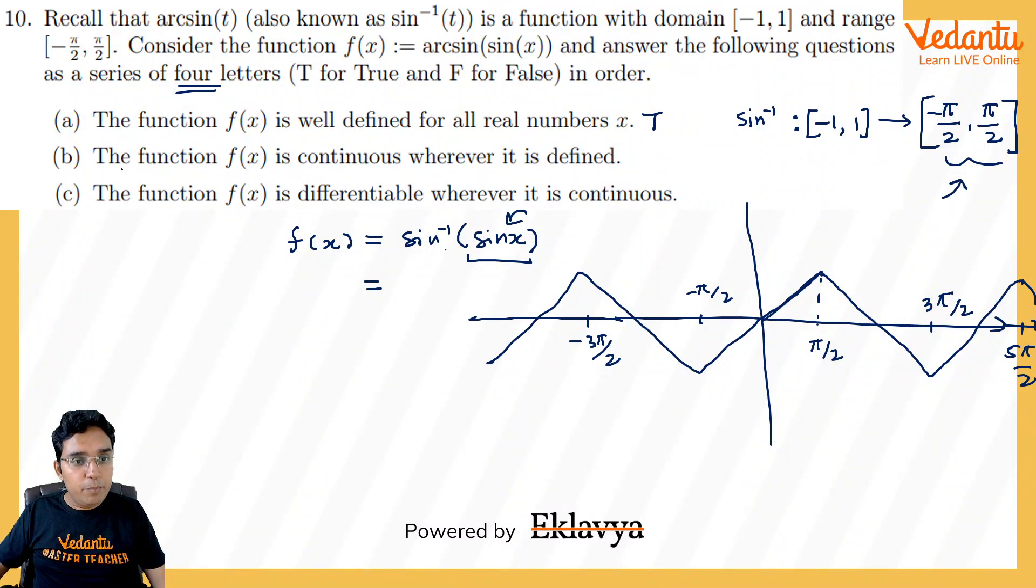So this first statement is true. Part (b): The function f(x) is continuous wherever it is defined. Definitely true. You can see this graph goes like this zigzag, so at every point it will be continuous.